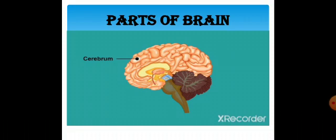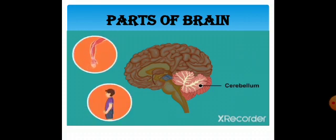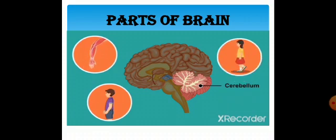The cerebellum, located below the cerebrum, coordinates voluntary movements like balance, movement, and speech. It controls motor functions and muscular activity.